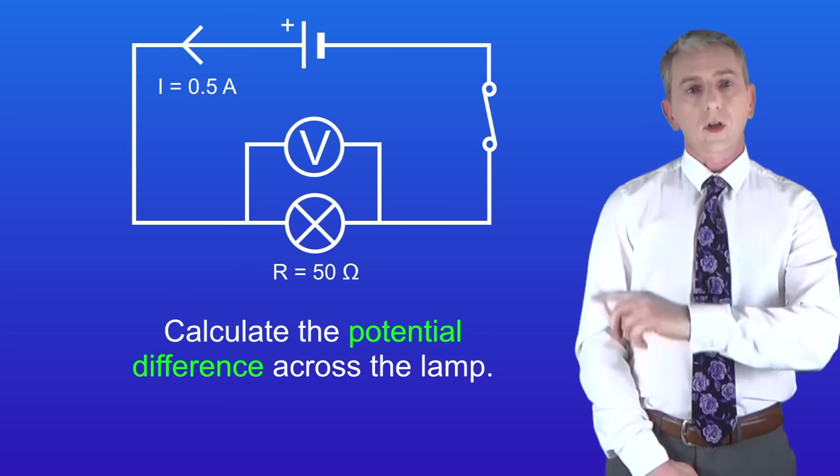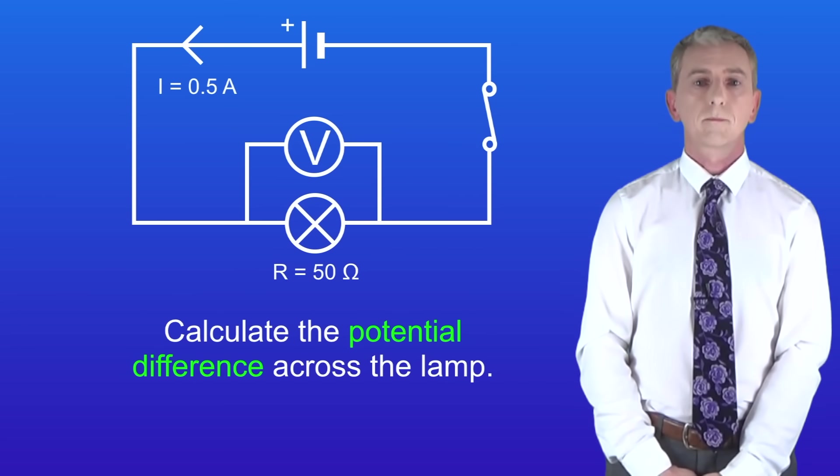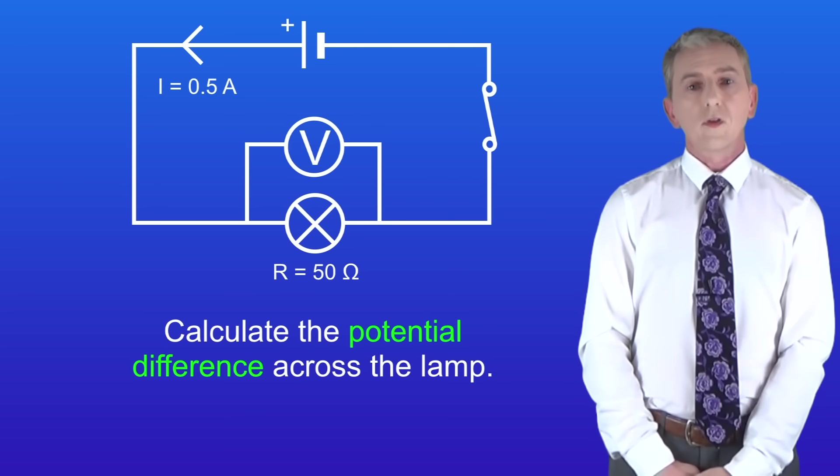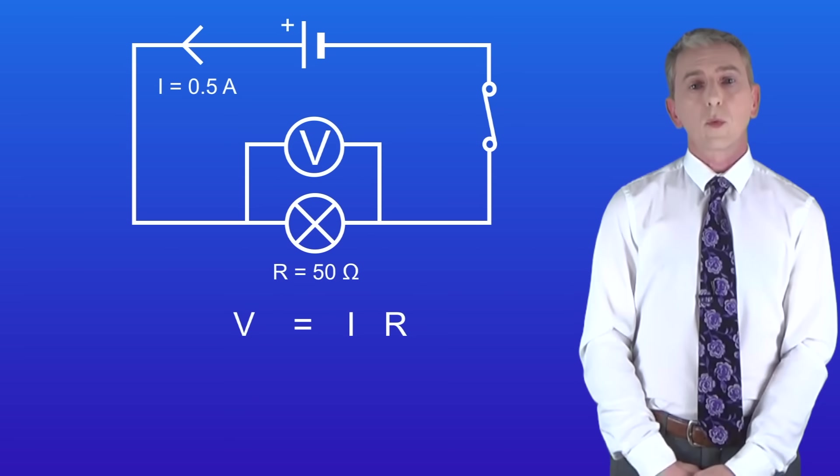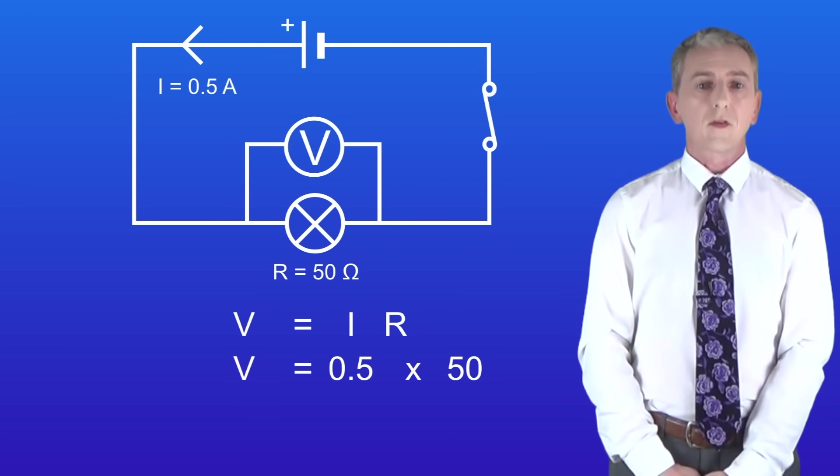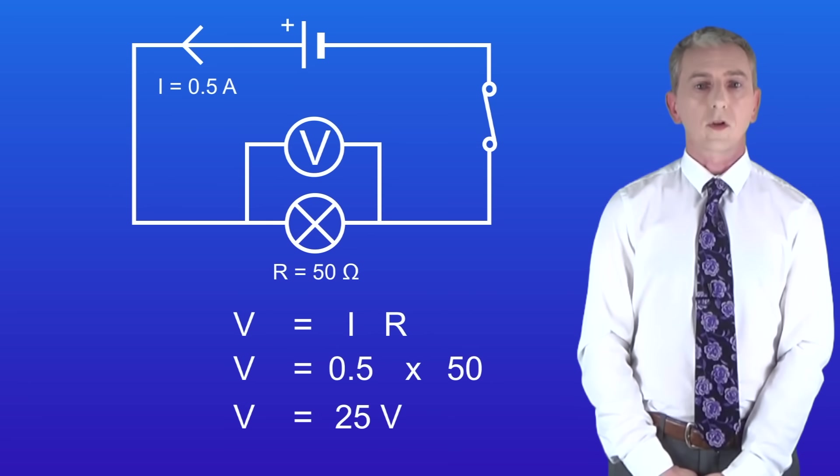Here's a typical question. Calculate the potential difference across the lamp. We can see that the current is 0.5 amperes and the resistance of the lamp is 50 ohms. So to calculate the potential difference we multiply the current by the resistance. 0.5 multiplied by 50 gives a potential difference of 25 volts across the lamp.